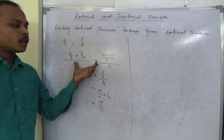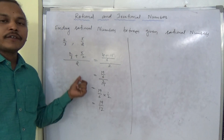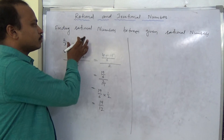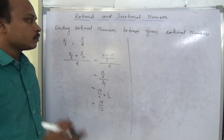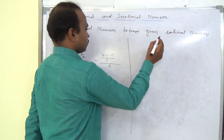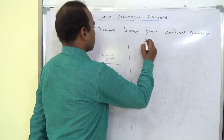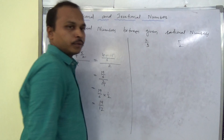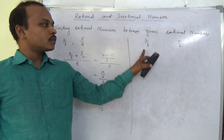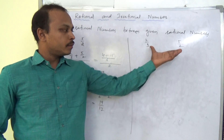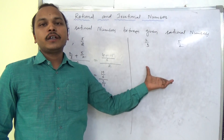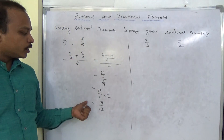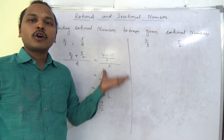To find exactly one rational number, this add-and-divide-by-2 method works, but it is a long process. If you want to find a very large number of rational numbers — say 5, 10, or 15 at a time — doing repeated addition and division by 2 each time is tedious and inefficient.